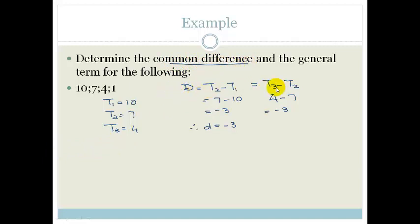Now it says find the general term. So we know that Tn is equal to a plus n minus 1d. Now, Grade 11, that is on your maths formula sheet, so you don't have to memorize it, but it would be good if you can recognize this as the arithmetic sequences. So now we want the general formula. So a is always your first term, so that's going to be 10 plus n minus 1 times by d, which we've said is minus 3.